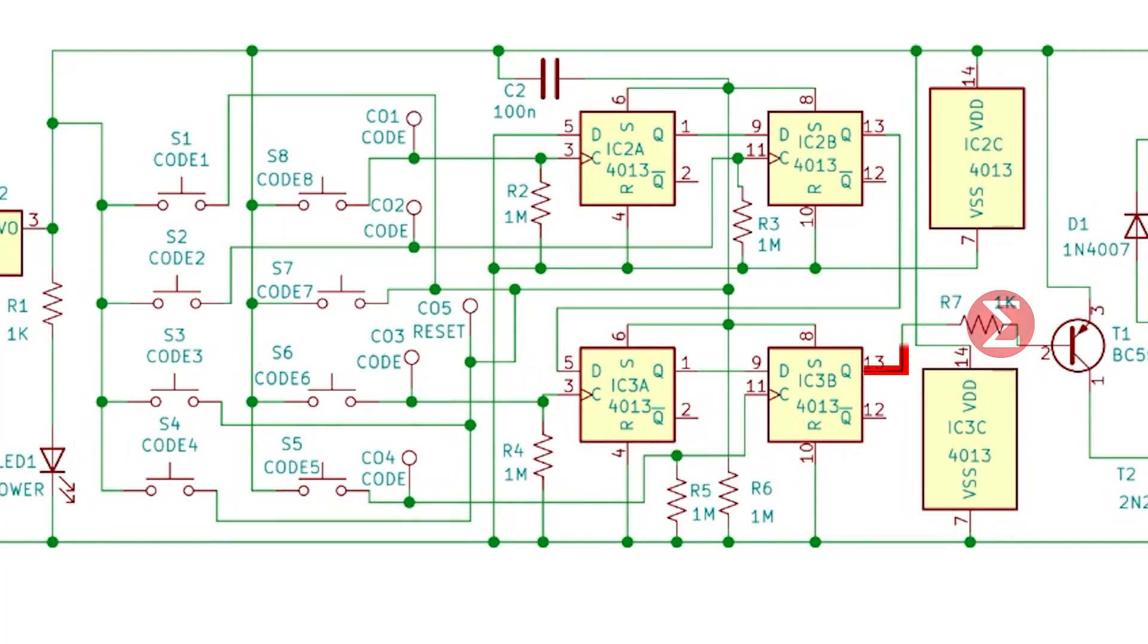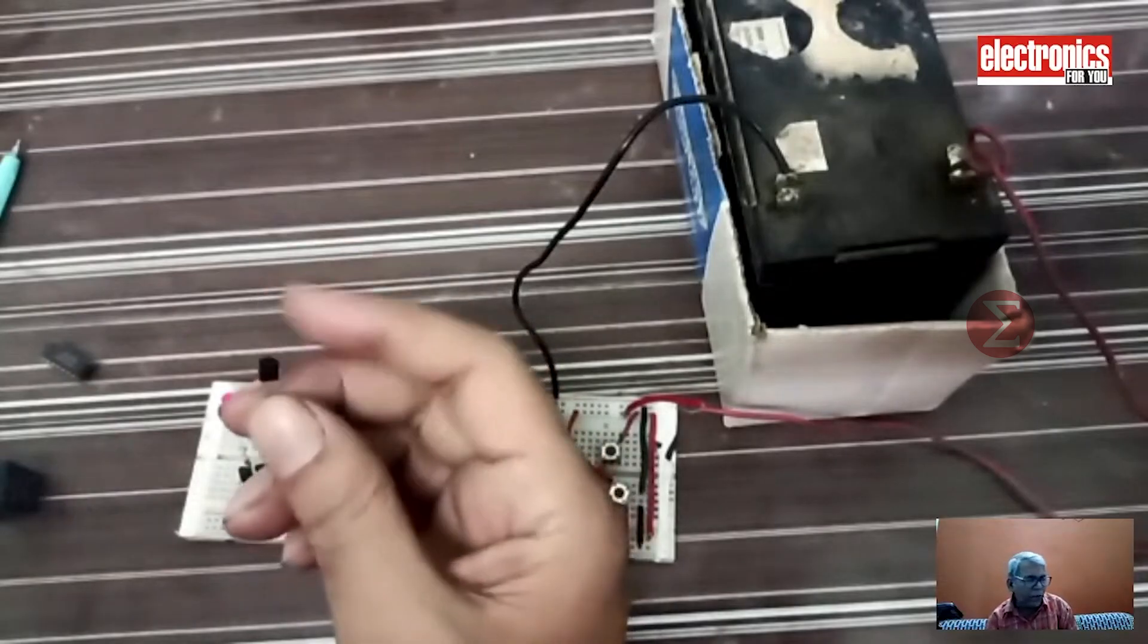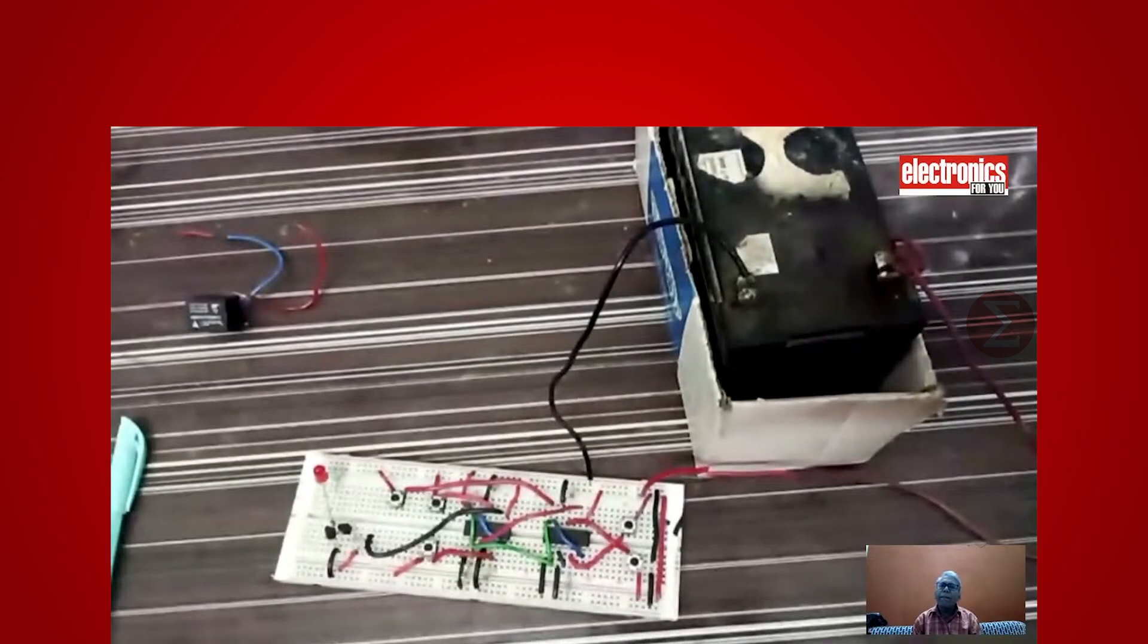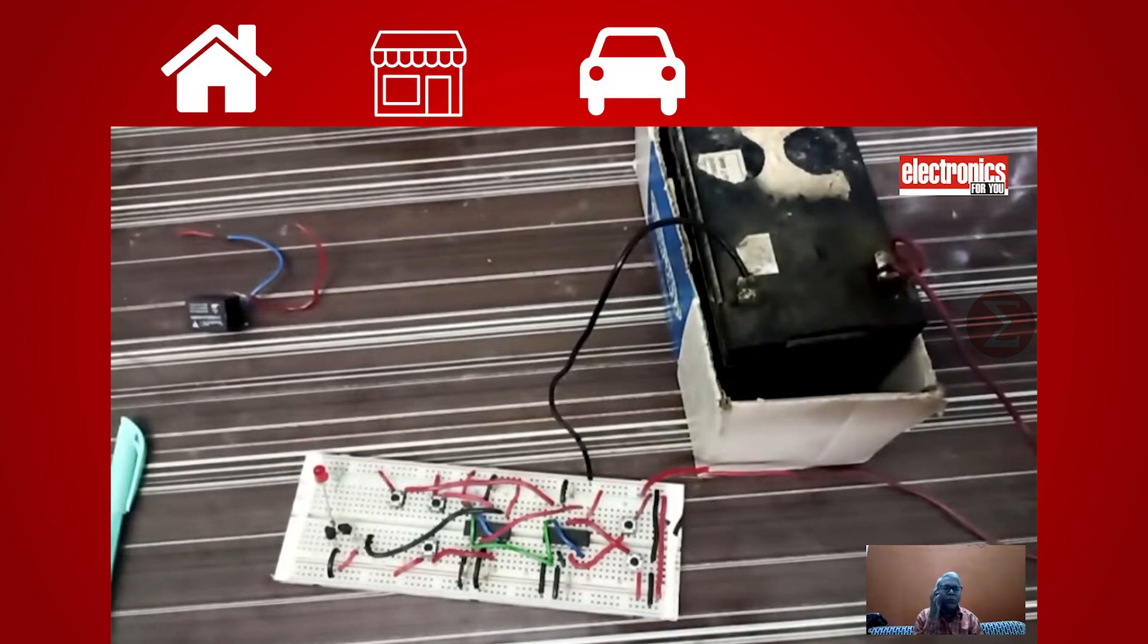The output of the last D flip-flop is going to the relay driving transistor as visible in the circuit diagram. Hence, when you press the correct code, the relay driving transistor energizes and the gate opens. This circuit has various applications like you can use this in your home, at shop, in your car, cycle, or any other vehicle.